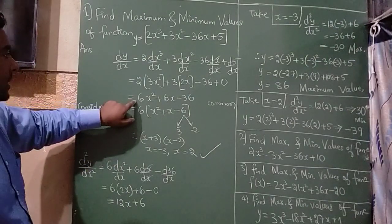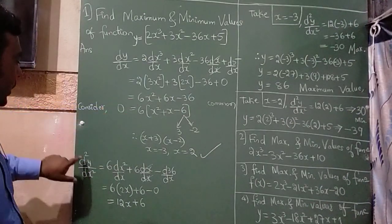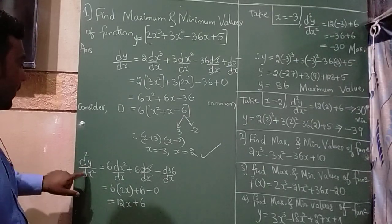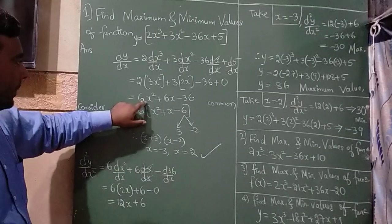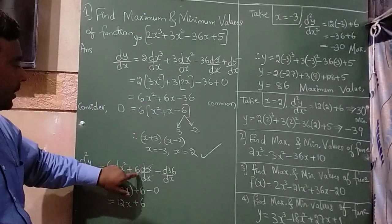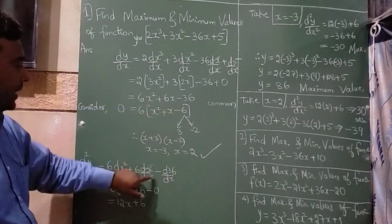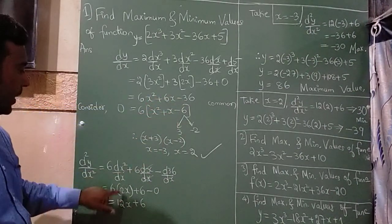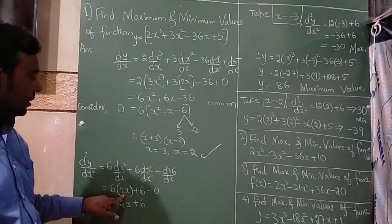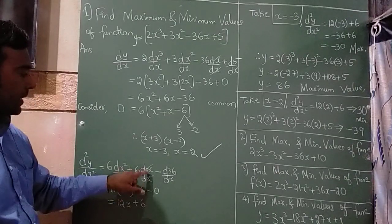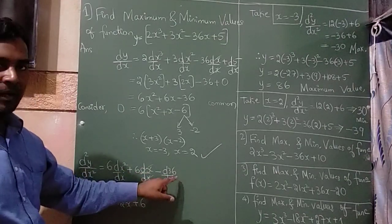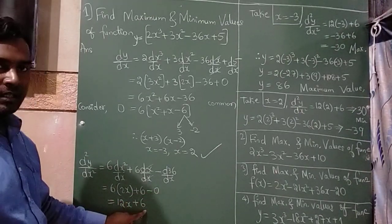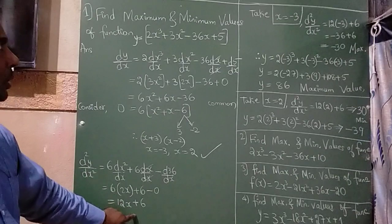Now this equation, I am going to differentiate once again. So d²y/dx² = 6(d/dx of x²) + 6(d/dx of x) - d/dx of 36. x² means it is 2x. So after differentiating, dx/dx get cancelled, d/dx of any number is 0. So 6 times 2 is 12x + 6. So double differentiation is also over.